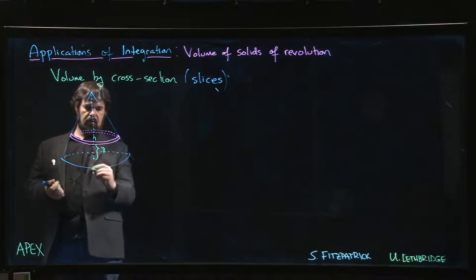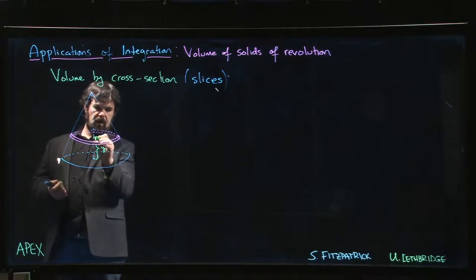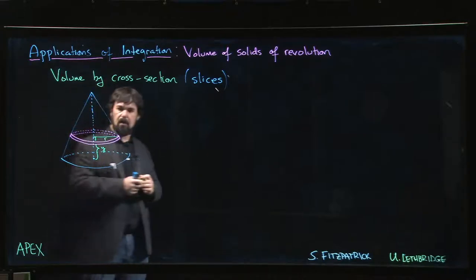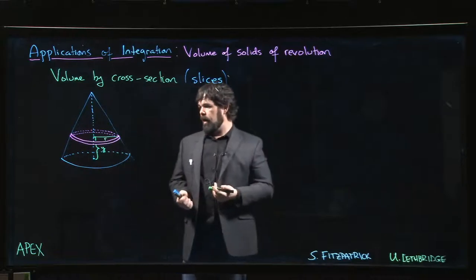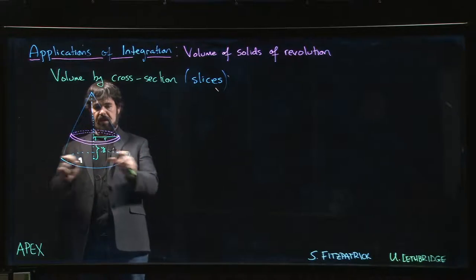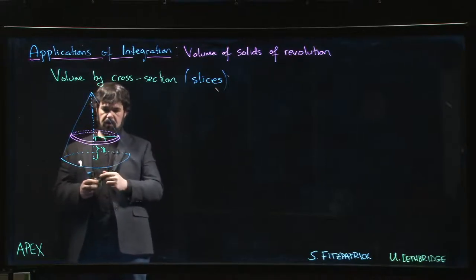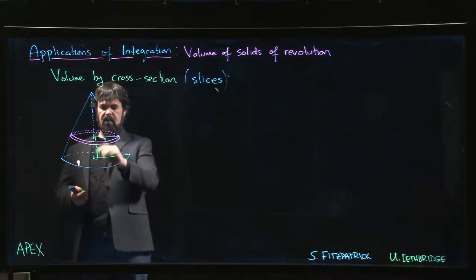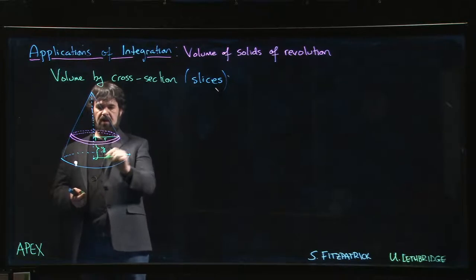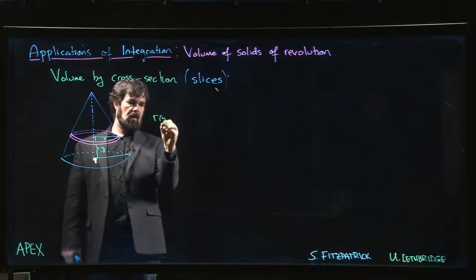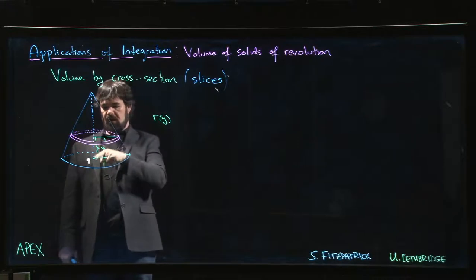If we know the overall base radius and height of the cone, we can essentially use an argument by similar triangles to figure out, for this given height, what is the radius. For a given height, you can figure out what r is as a function of y. We won't bother with it here, but we can work out what r(y) is.